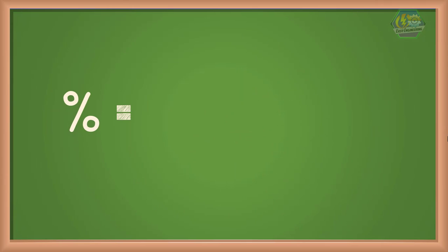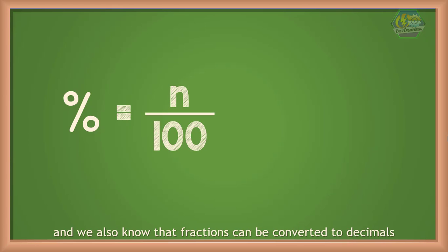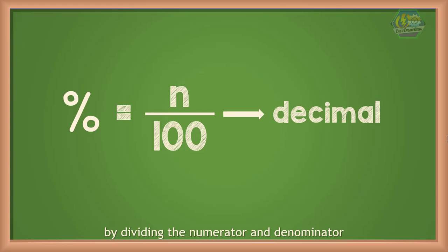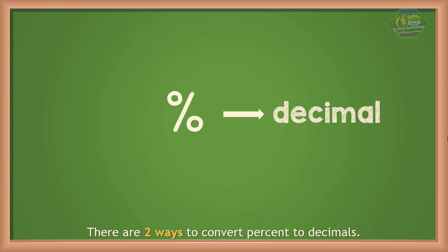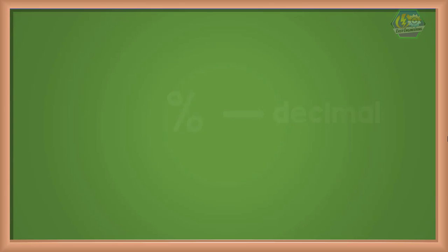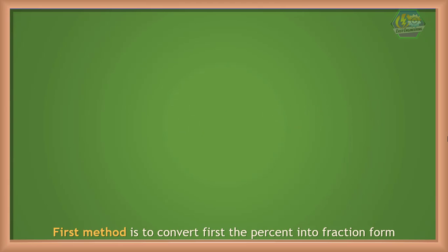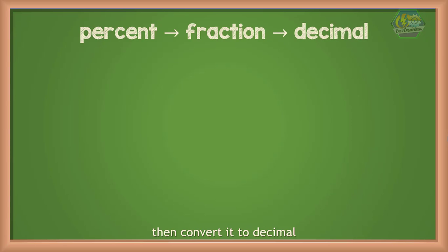Since we know that percent is just a fraction with a denominator of 100, and fractions can be converted into decimals by dividing the numerator by the denominator, percentages can also be written as decimals. There are two ways to convert percent to decimals.